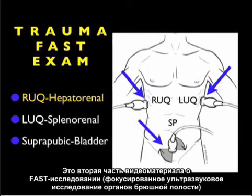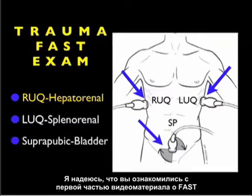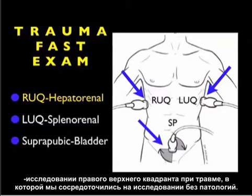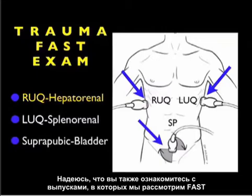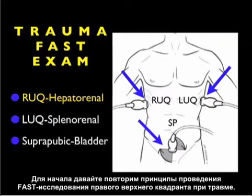In this module, entitled part two of the right upper quadrant view of the trauma FAST exam, we're going to focus entirely on positive findings from this view. Hopefully you've had a chance to join me prior for part one, where we focused entirely on normal findings from the right upper quadrant, and hopefully you'll join me as we go through the left upper quadrant and suprapubic views of the trauma FAST exam. Let's begin this module with a review of how to perform the right upper quadrant view.